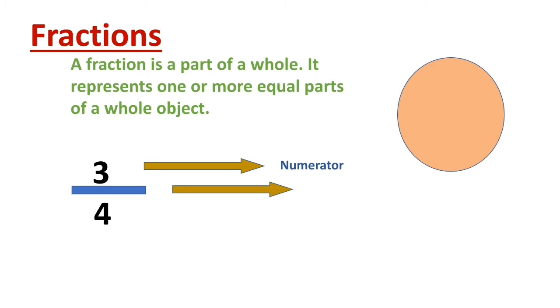The line is called the Fraction Bar or the Division Bar. The number below the line is called the denominator. It indicates the total number of equal parts the whole is divided into.